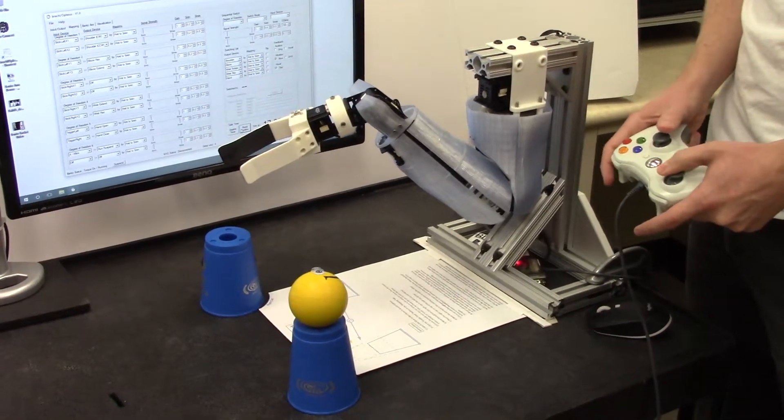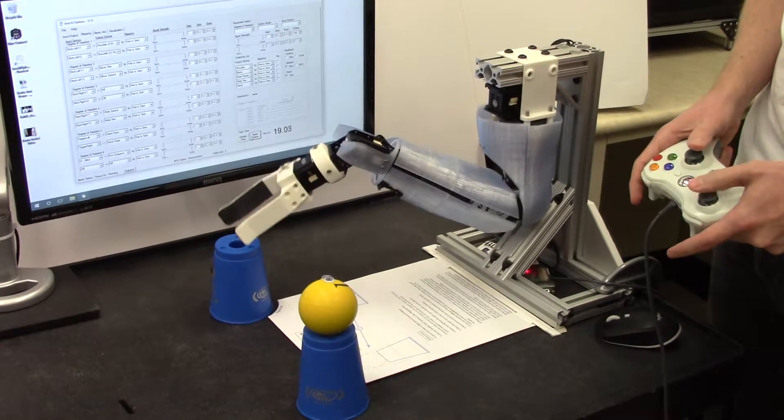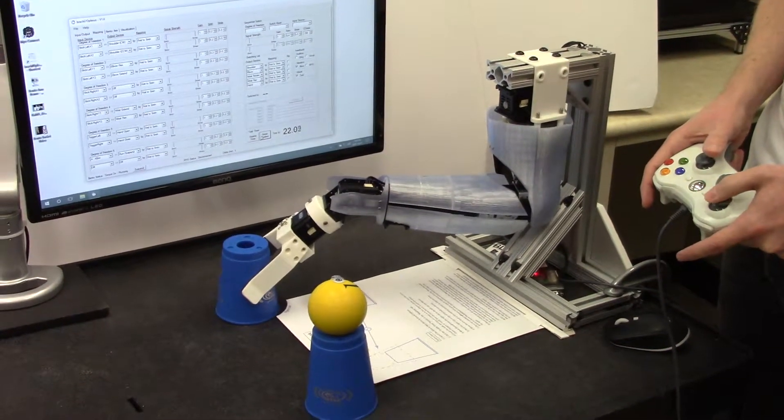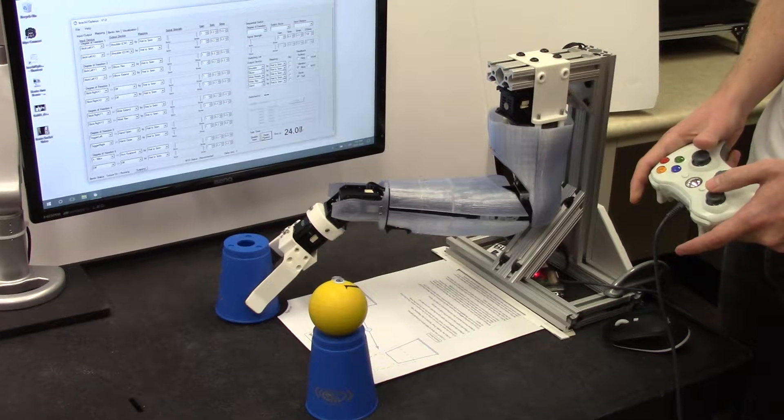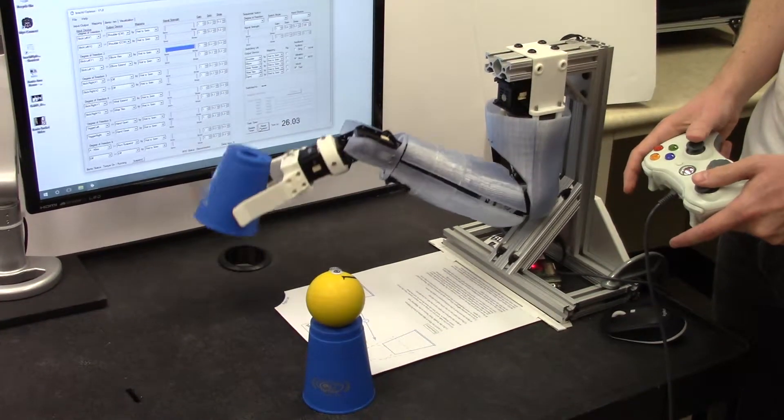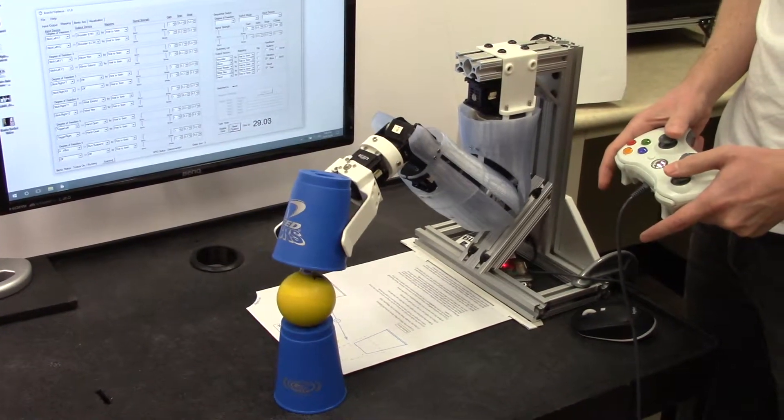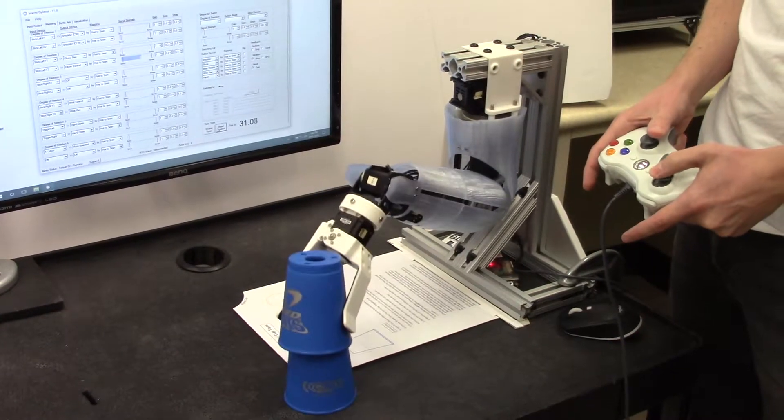You're going to go grab the other cup, and you need to grab it fairly close to the table. Lower if you can, and then make sure you've got a good squeeze on it. Go up, come around, and place it onto this cup, like that.